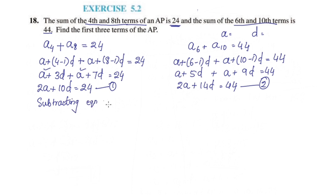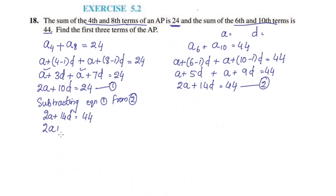Subtracting equation 1 from equation 2: equation 2 is 2a plus 14d equal to 44, and equation 1 is 2a plus 10d equal to 24.